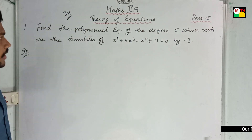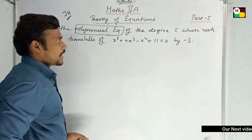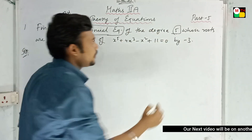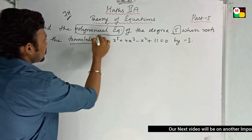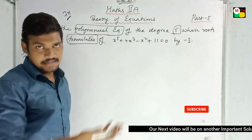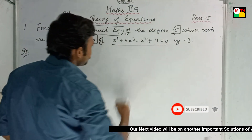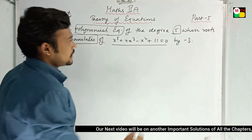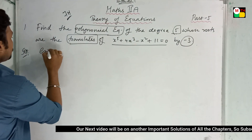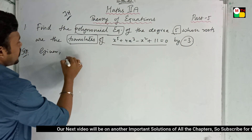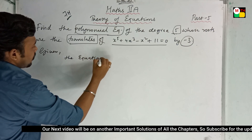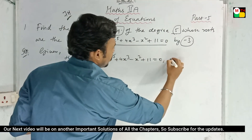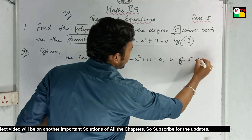Now let's find the polynomial equation. This is the polynomial equation of degree 5. Whose roots are the translates? This is the translates problem. The translates — 1 to 0 — is of degree 5.